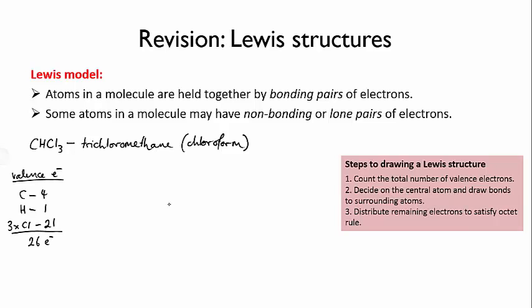Then we decide on the central atom. Carbon forms four bonds and hydrogen and chlorine usually form only one bond each. So carbon should be in the middle. I draw bonds to join the atoms together. That's four bonds. So that uses up eight of my electrons and I still have 18 left.